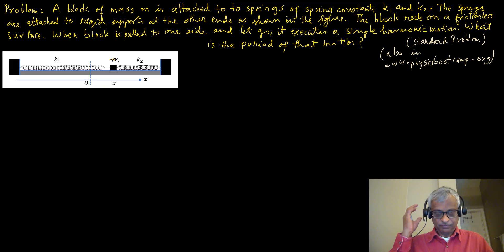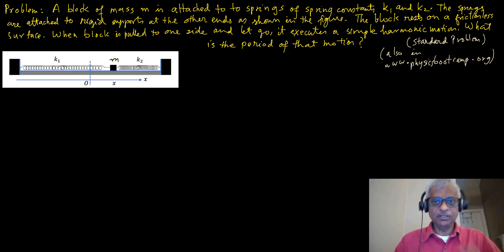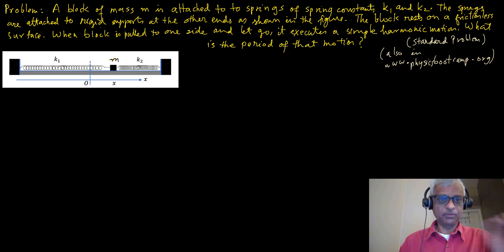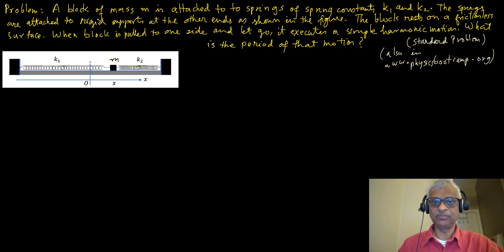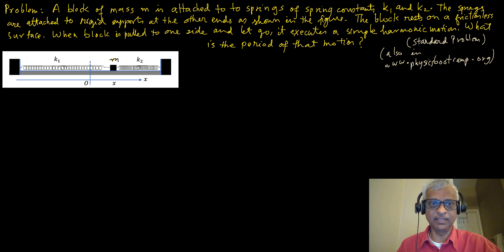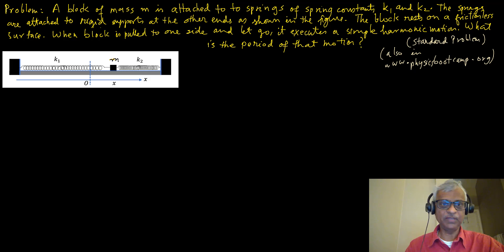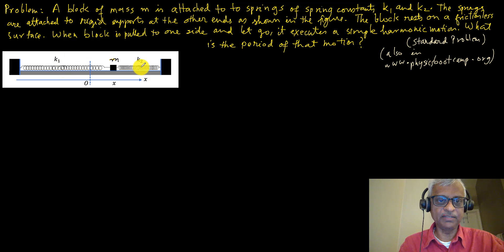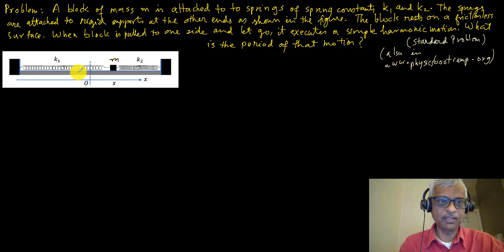Hello everyone, today we have a really standard problem that comes in a couple of varieties. Sorry about being out of the recording cycle for a while — I've been traveling. Bear with me, I'm trying to get back to recording one problem a day. So here is the problem: there's a spring, another spring, and a block right in the middle that moves back and forth. You pull it and let go, the block oscillates.